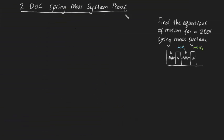G'day guys, welcome back. In this video we're going to find the equations of motion for a two degree of freedom spring mass system. This is our system — we've got one block here, we've got another block here, they're both of mass m, and these springs have spring stiffnesses, both of k.